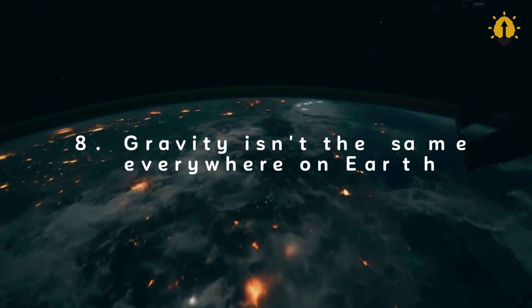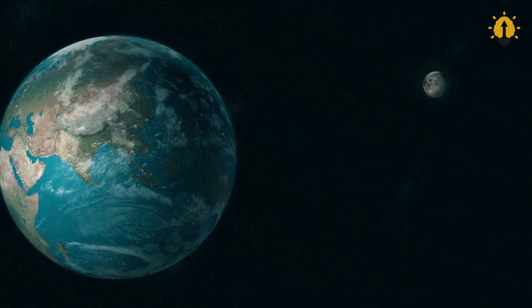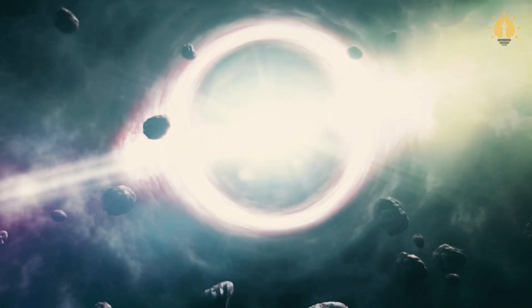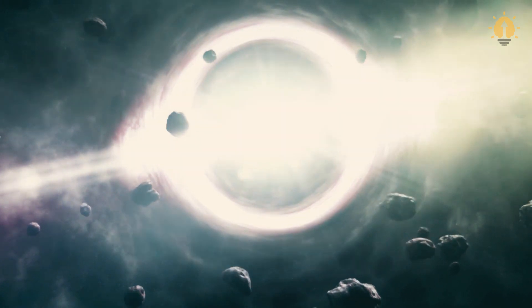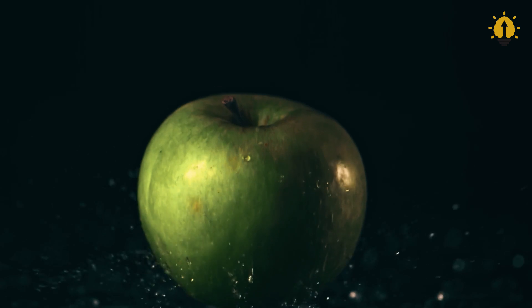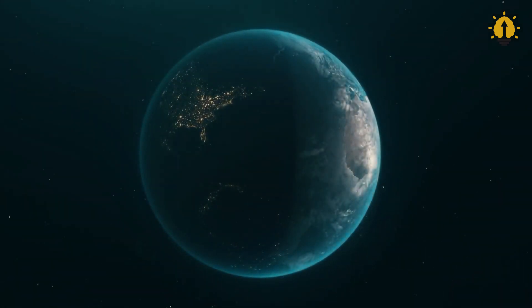Number 8: Gravity isn't the same everywhere on Earth. If our planet were a perfect round sphere with uniform mass all around, gravity would act the same everywhere on its surface. However, Earth isn't exactly like that. It's more of a flattened sphere, which means gravity isn't evenly spread out, and its strength varies depending on where you are.